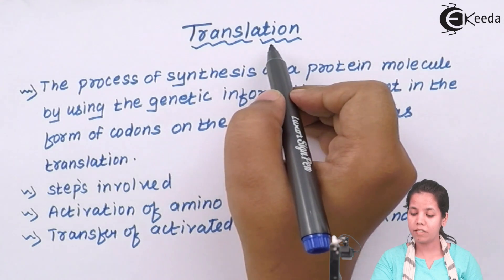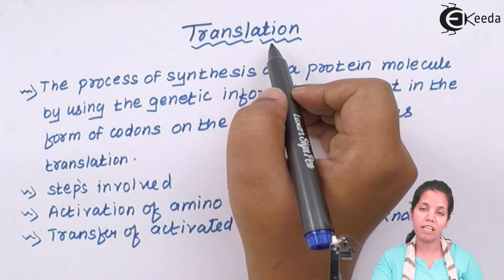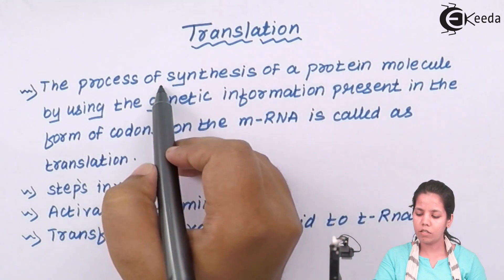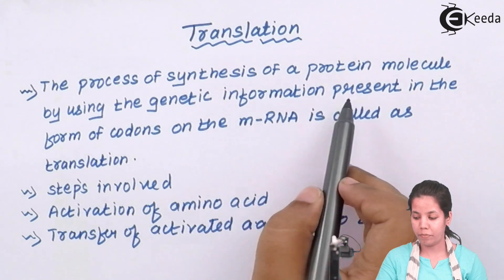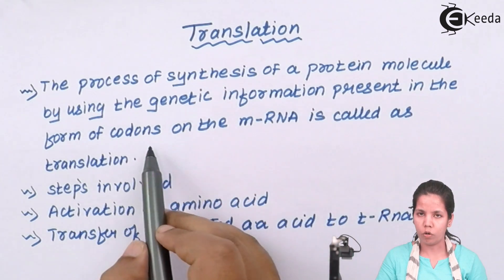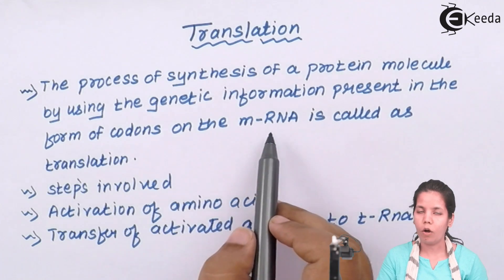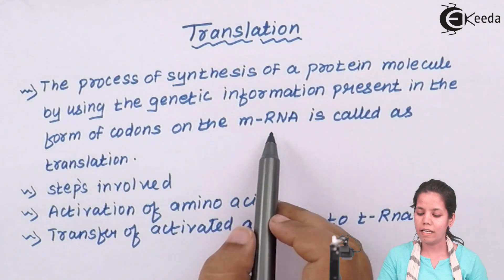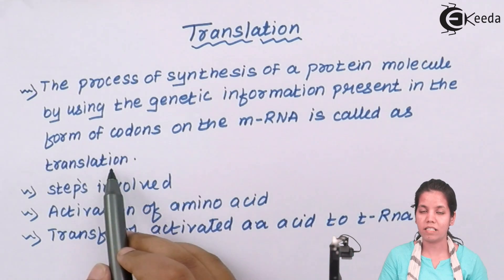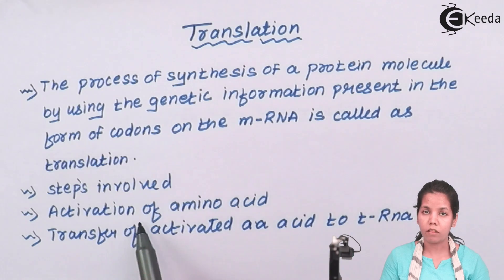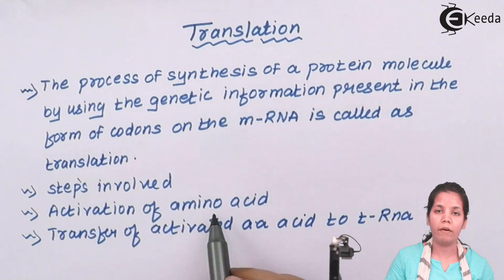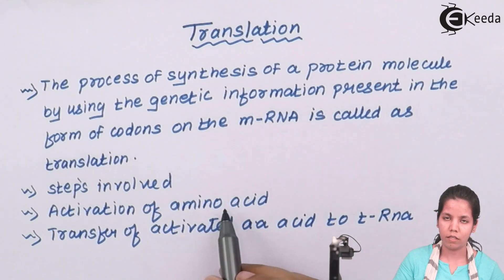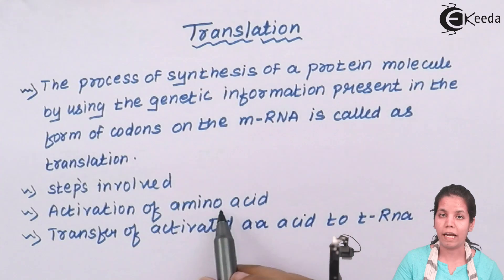Translation and when I speak about translation, it is a process by which proteins are formed. The process of synthesis of a protein molecule by using genetic information that is present in the form of codons, especially triplet codons on the mRNA or you talk about messenger RNA is called as translation and this process takes place inside the cytoplasm of a cell. The steps involved are the first step is activation or charging of amino acids and we all know amino acids are the smallest units of proteins which are joined together by peptide linkage.